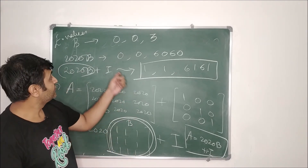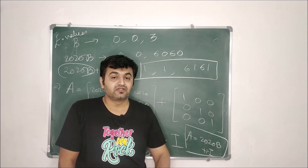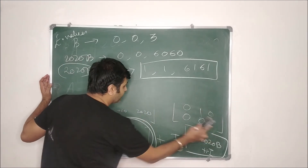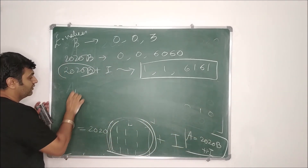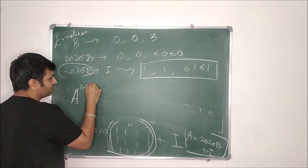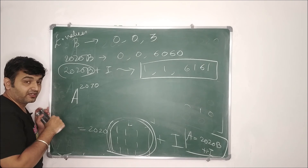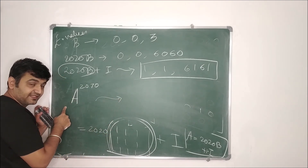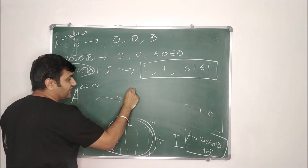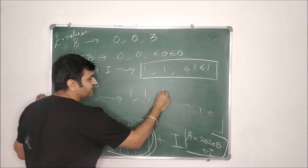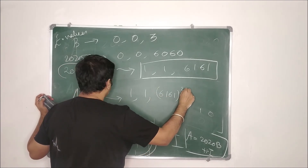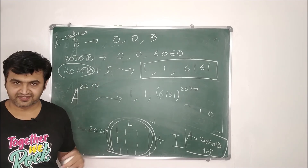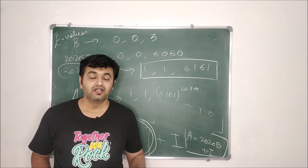The eigenvalues for the given matrix A are 1, 1, and 6061. Now if you further ask what are the eigenvalues for A raised to the power 2070 — as discussed in my earlier lecture, the eigenvectors remain the same and the eigenvalues are raised to that power: 1^2070, 1^2070, and 6061^2070.